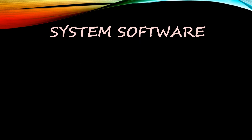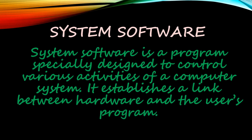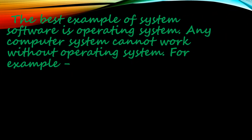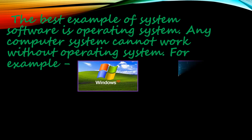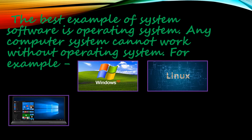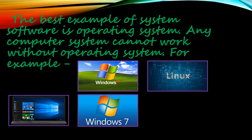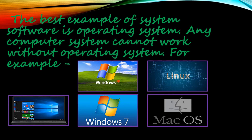So, what is system software? System software is a program specially designed to control various activities of a computer system. It establishes a link between hardware and the user's program. The best example of system software is the operating system. Any computer system cannot work without an operating system. For example: Windows XP, Linux, Windows 10, Windows 7, Mac OS, etc.